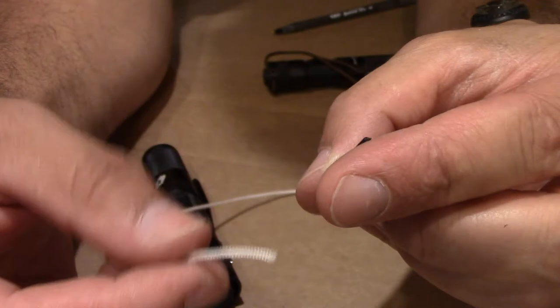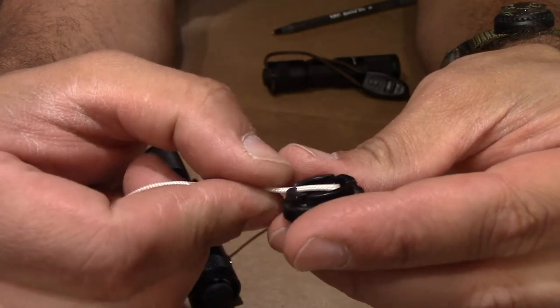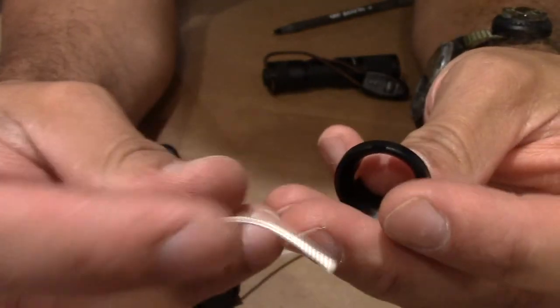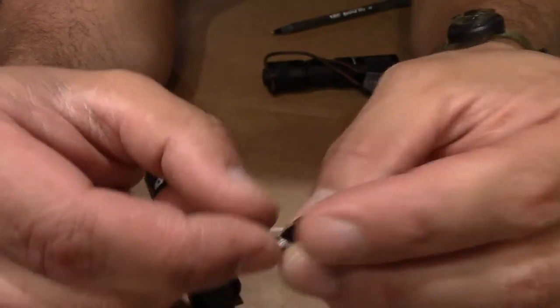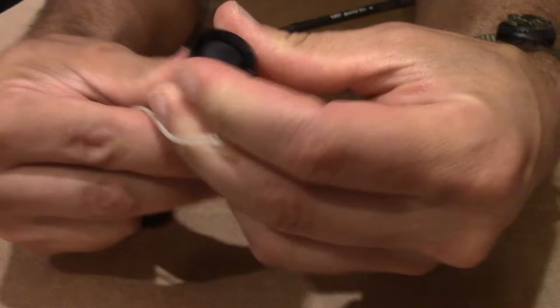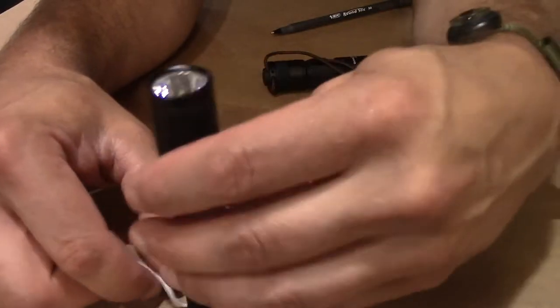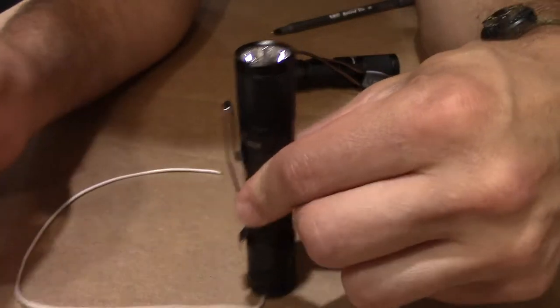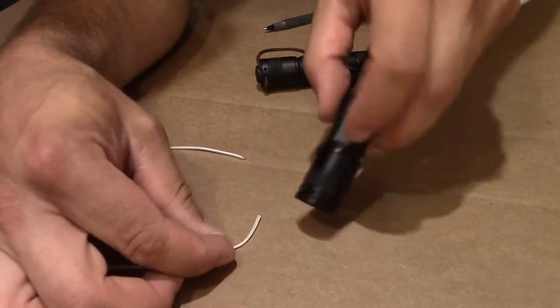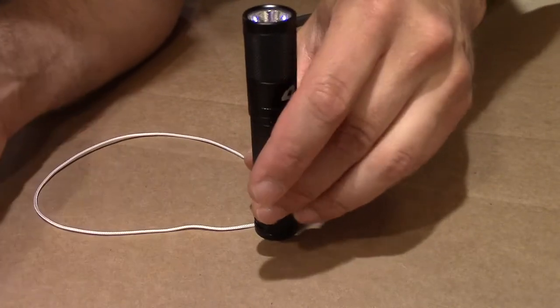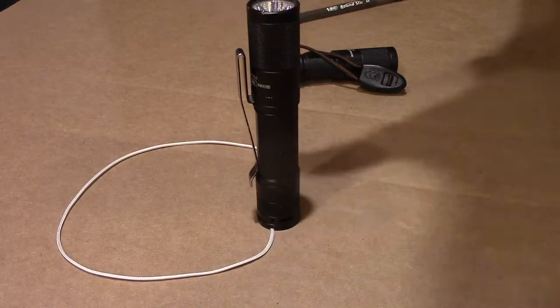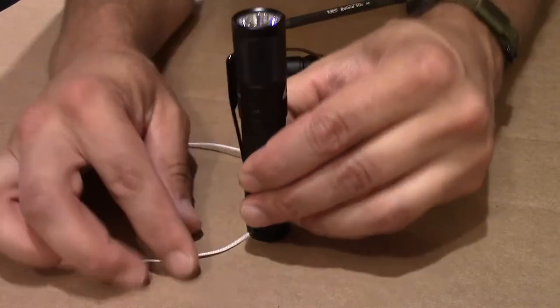So the changes that I would recommend is I would make a cutout in here for a lanyard and I would make a cutout up here for a lanyard because that now allows this light to tail stand with the lanyard in that little notch.